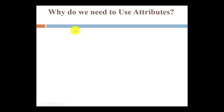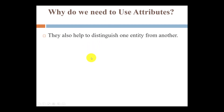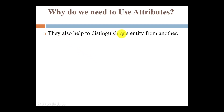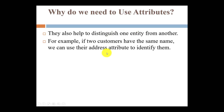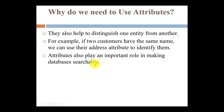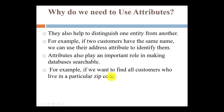The question arises: why do we need to use attributes? The first use is they help to distinguish one entity from another. For example, if two customers have the same name, we can identify each customer separately by their address or by another identifier like a customer number. Attributes also play an important role in making the database searchable. For example, if I want to search for a customer located in a particular zip code, I can search by the attribute zip code.